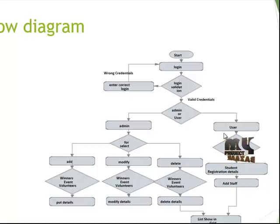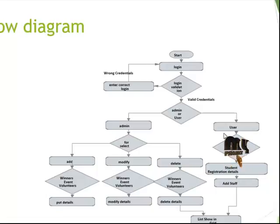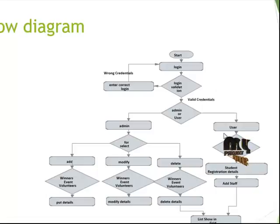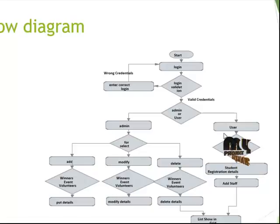The admin process includes: select details, modify details, delete details, add winner event volunteers, and modify or remove data in winner event volunteers. The user process includes school registration, student registration details, and viewing the registration details list displayed in a grid. The grid allows insert data, modify data, and delete data operations, then stop the process.